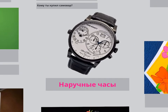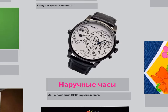НАРУЧНЫЕ ЧАСЫ — wristwatches. РУКА is hand, so РУЧ is the root for hand. МАША ПОДАРИЛА ПЕТЕ НАРУЧНЫЕ ЧАСЫ. It's inanimate, so you don't change ЧАСЫ — that's actually accusative case; because it's inanimate, it stays the same. But ПЕТЕ is dative — so Е appears.